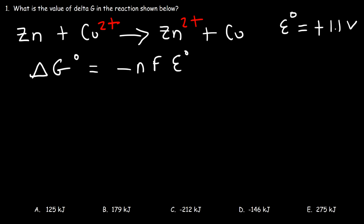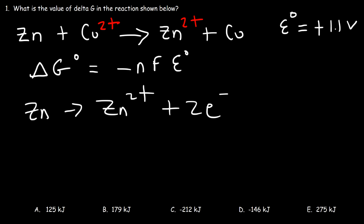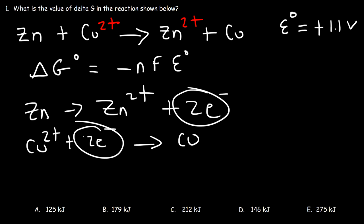The first thing we need to do is calculate n. We need to look at the overall balanced reaction and separate it into half reactions. Starting with the oxidation half reaction: as zinc turns into zinc 2+ we need to add two electrons to the right to balance the charge. For copper, we need to add two electrons to the left. So the number of electrons in a balanced chemical reaction is n — in this example, n is 2 moles of electrons.